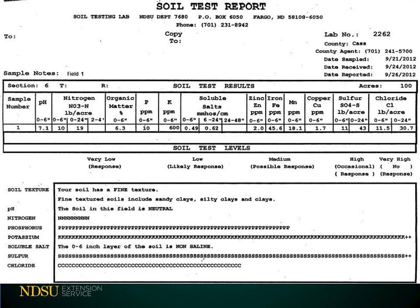Soil test reports typically display nitrogen in pounds per acre and the other nutrients in ppm, or parts per million. Six inches of topsoil in an acre weighs roughly 2 million pounds. Because of this, you can multiply your soil test ppm by 2 to get a rough estimate of how many pounds of a nutrient is in your soil.